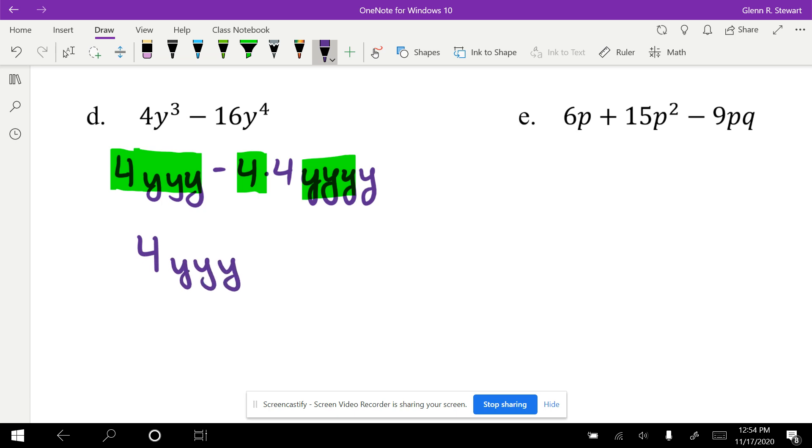What I'm taking out now - look, if I took the whole entire thing out from the very first one, I took a 4 and all three y's, I have nothing left. I need something called a placeholder. That placeholder number that we use in math is called 1. So 1 minus 4y. Then we put this back into math terms: 4y³(1 - 4y).